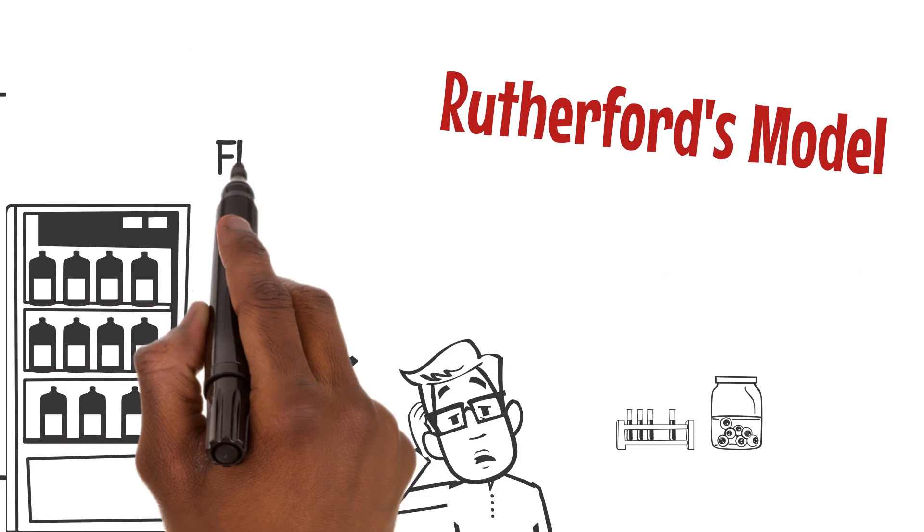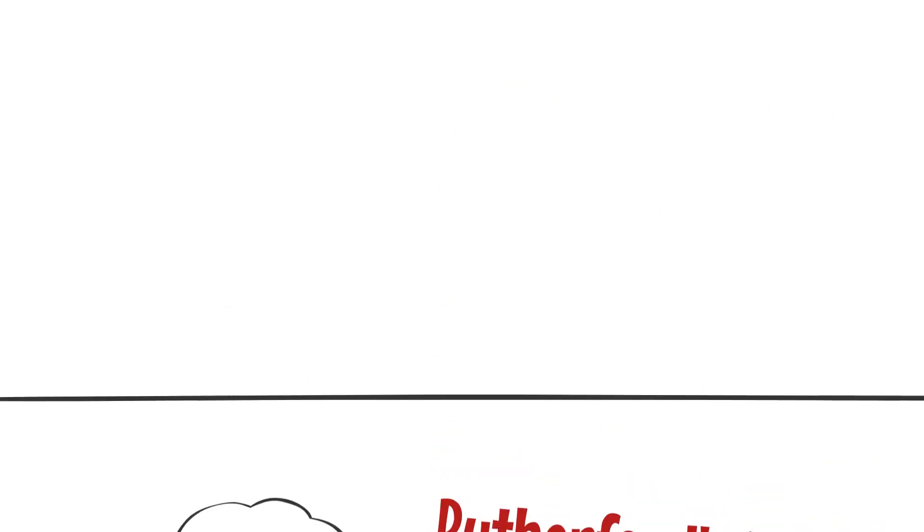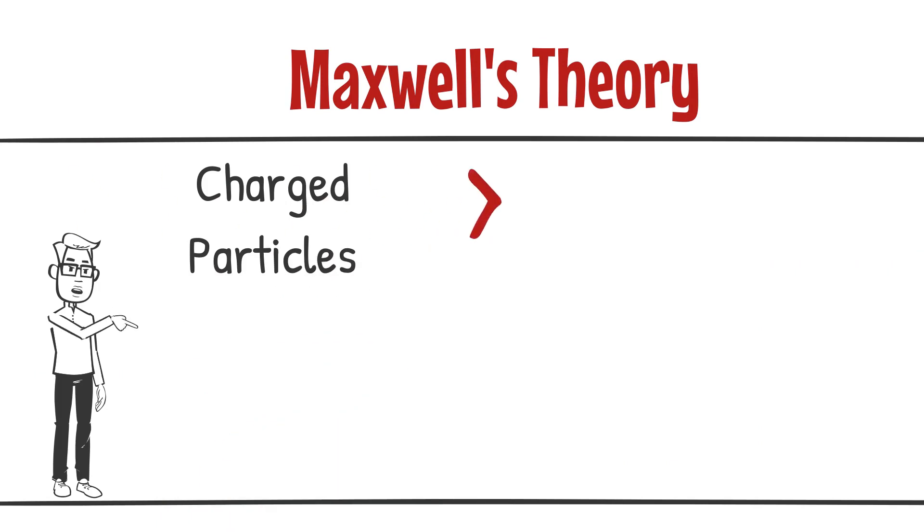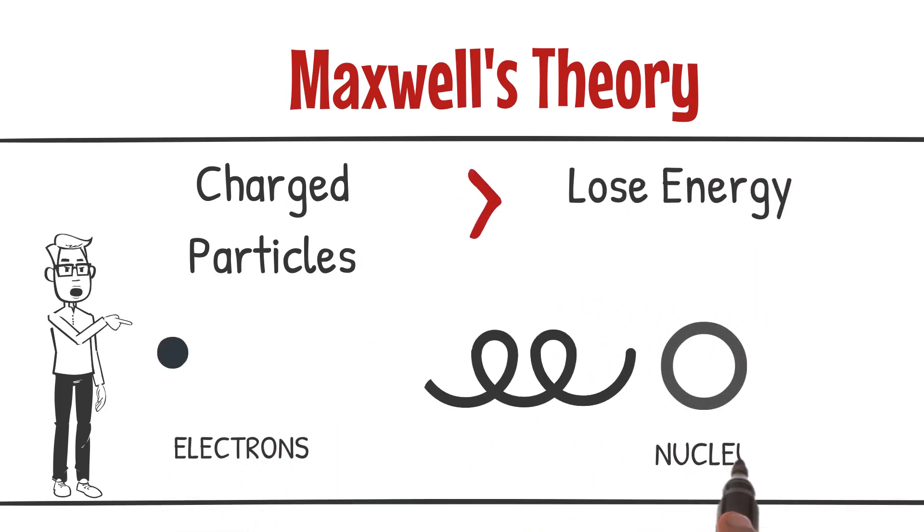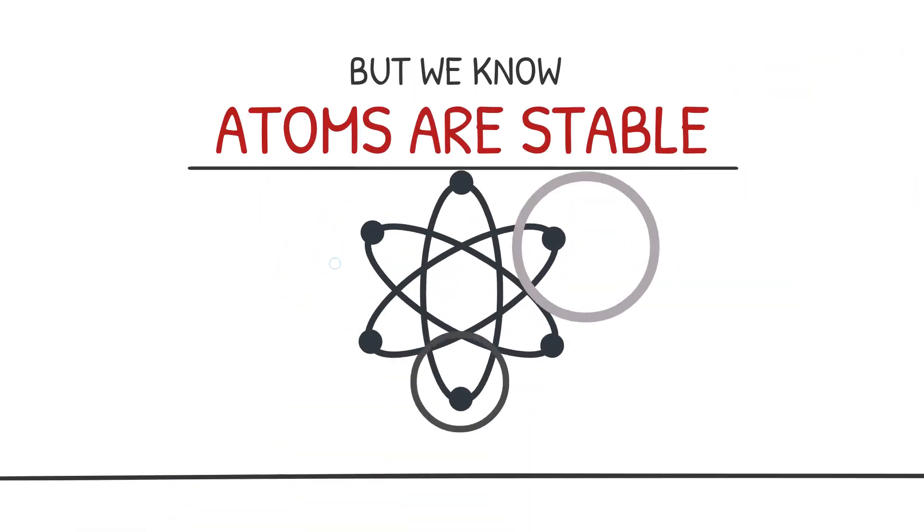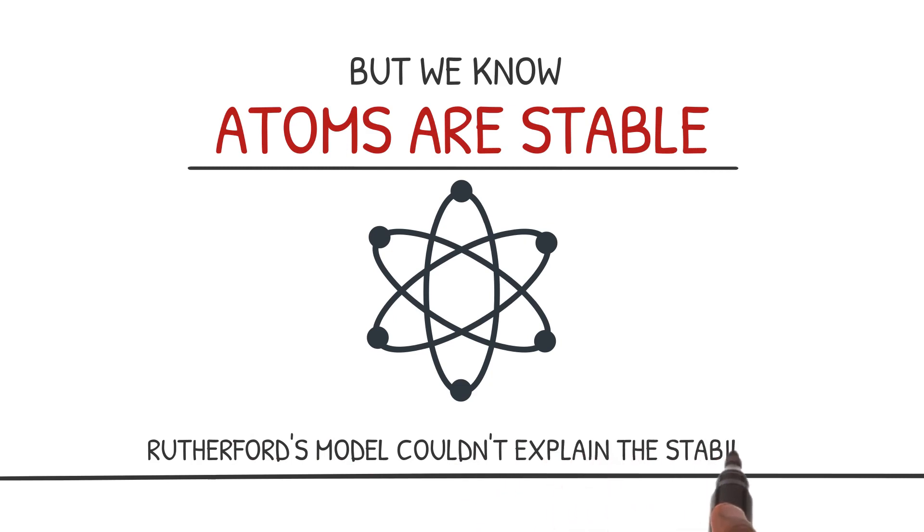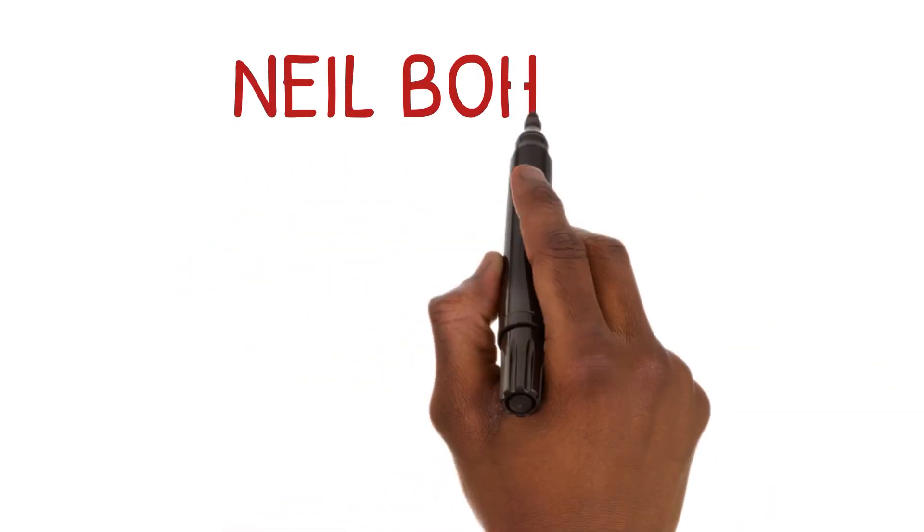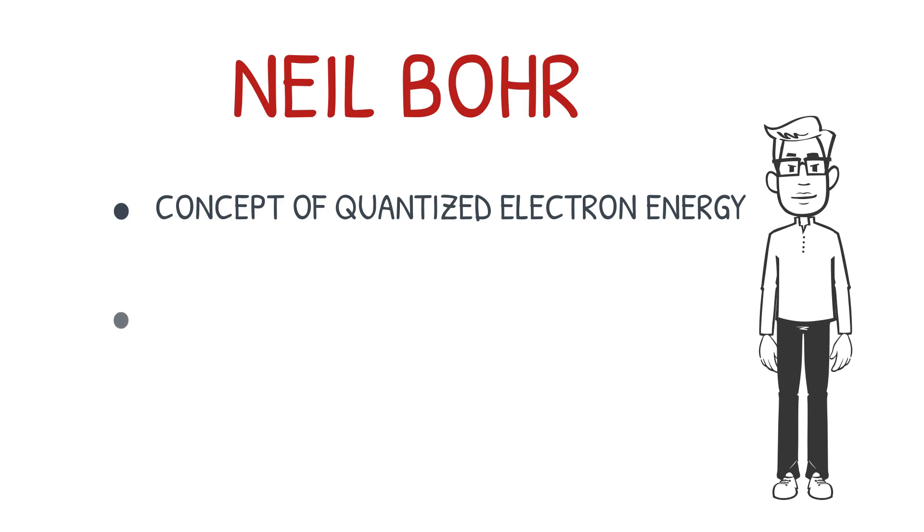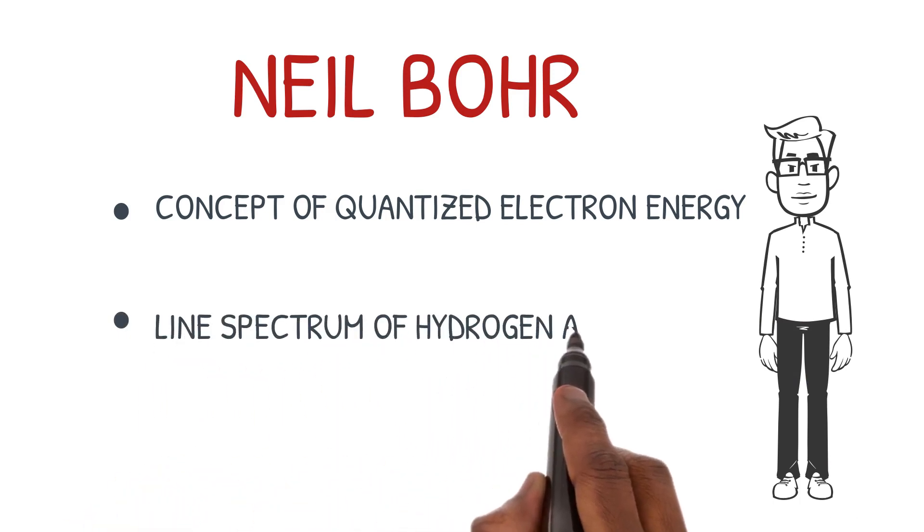Rutherford's model had a flaw, though. According to Maxwell's theory, charged particles lose energy as they accelerate, causing electrons to spiral into the nucleus. But we know atoms are stable. So, Rutherford's model couldn't explain this stability. That's when Niels Bohr, one of Rutherford's students, proposed his model, which introduced the concept of quantized electron energy and explained the line spectrum of the hydrogen atom.